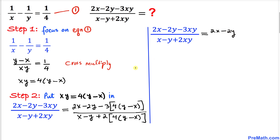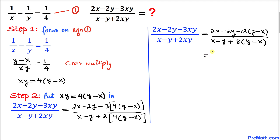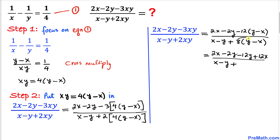Simplifying: in the numerator we distribute — 3 times 4 gives negative 12 times y minus x, so we get 2x minus 2y minus 12y plus 12x. In the denominator, 2 times 4 gives 8, so we get x minus y plus 8y minus 8x.